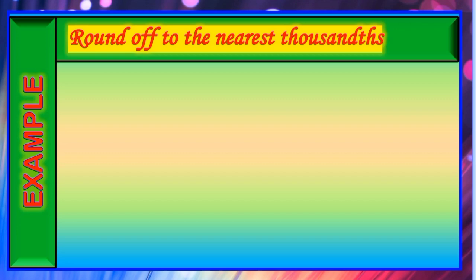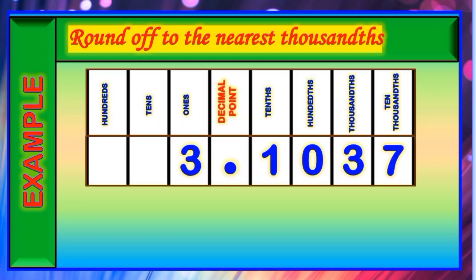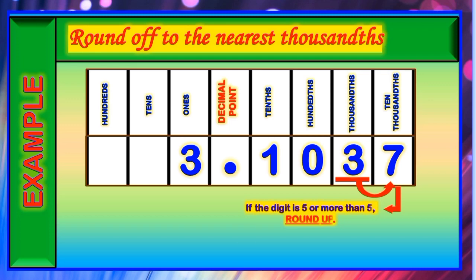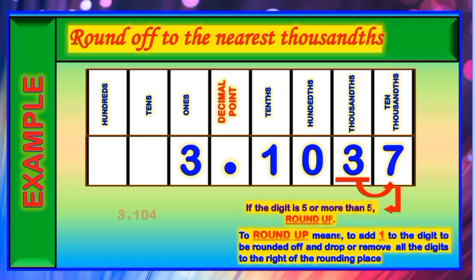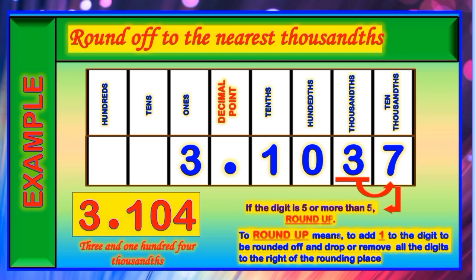Let us have another example rounding off to the nearest thousandths. The decimal number is 3 and 1,037 ten-thousandths. The digit in the rounding place is the digit 3, and the digit to its right is the digit 7. Since 7 is more than 5, we are going to round up — we add 1 to the digit 3, so 3 becomes 4, and we remove the digit 7. The remaining digits are 3, 1, 0, 4. Therefore, the final answer is 3 and 104 thousandths.